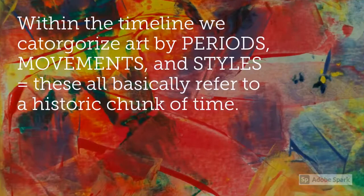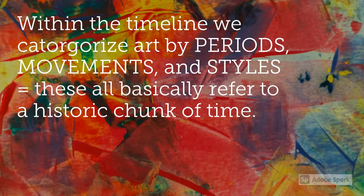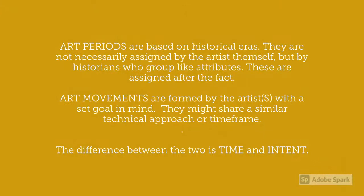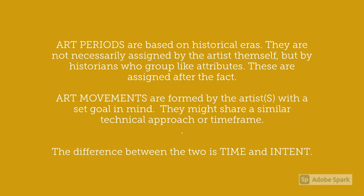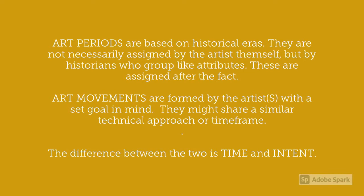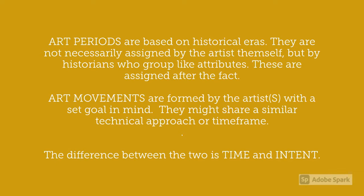So what is the difference between an art period and an art movement? Art periods are bigger chunks of time based on historical eras. They are not necessarily assigned by the artists themselves, but by historians who group like attributes — they are assigned after the fact. Art movements are formed by artists with a set goal in mind; they might share a similar technical approach or time frame. The difference between the two is time and intent.